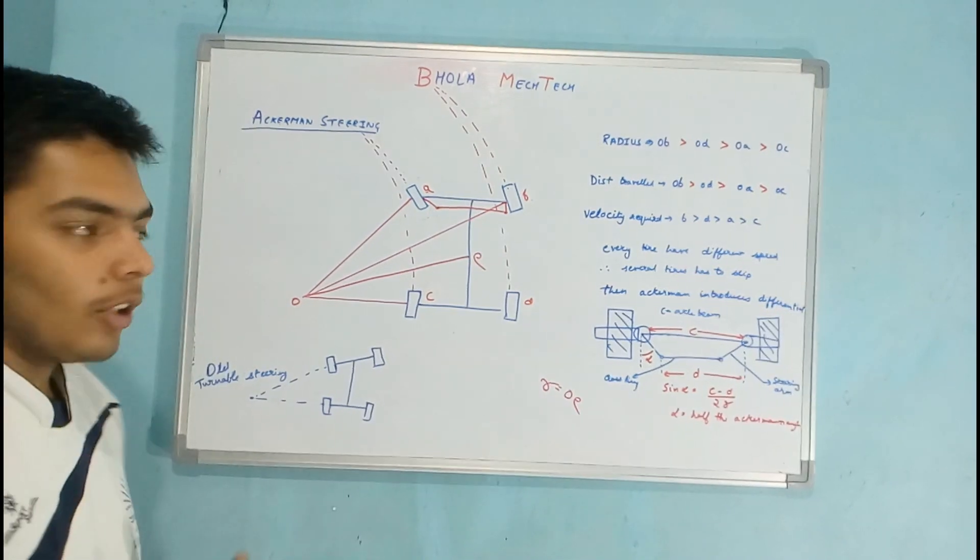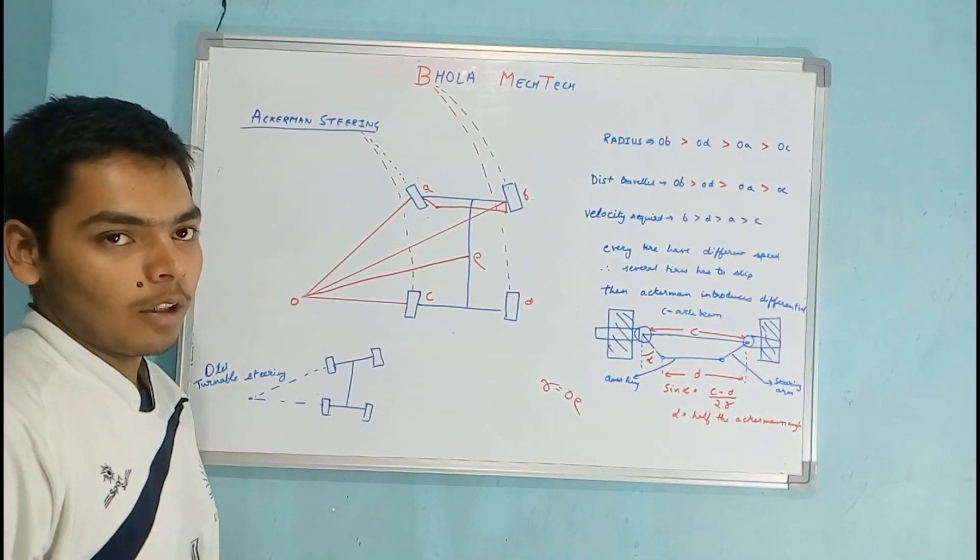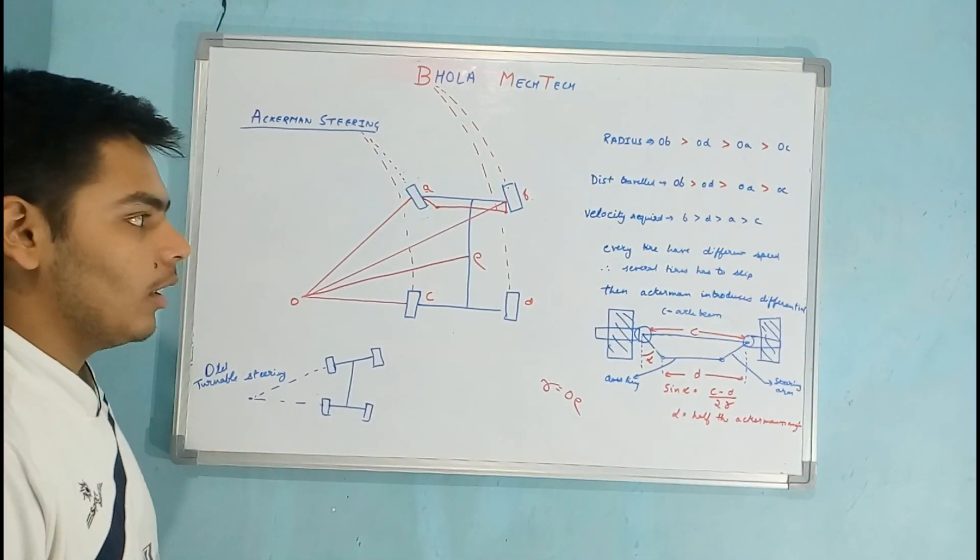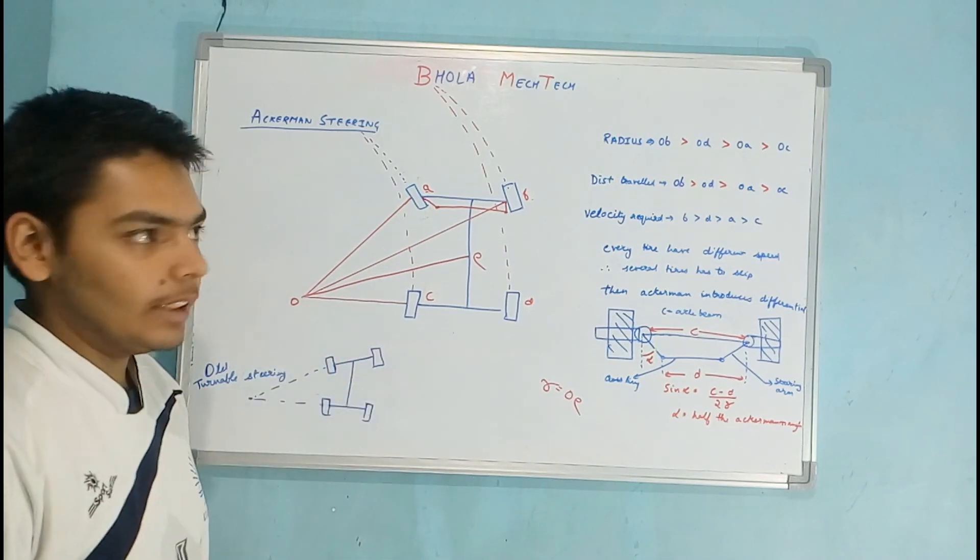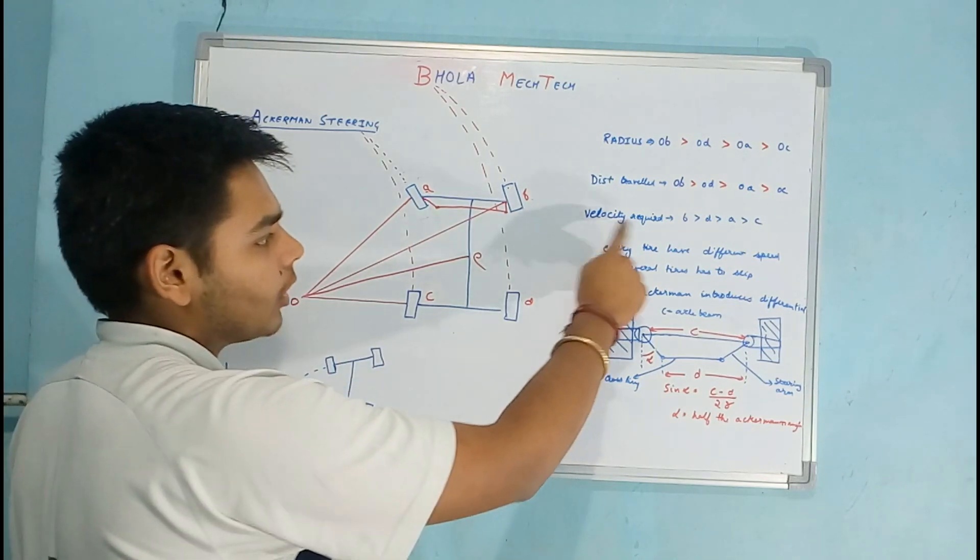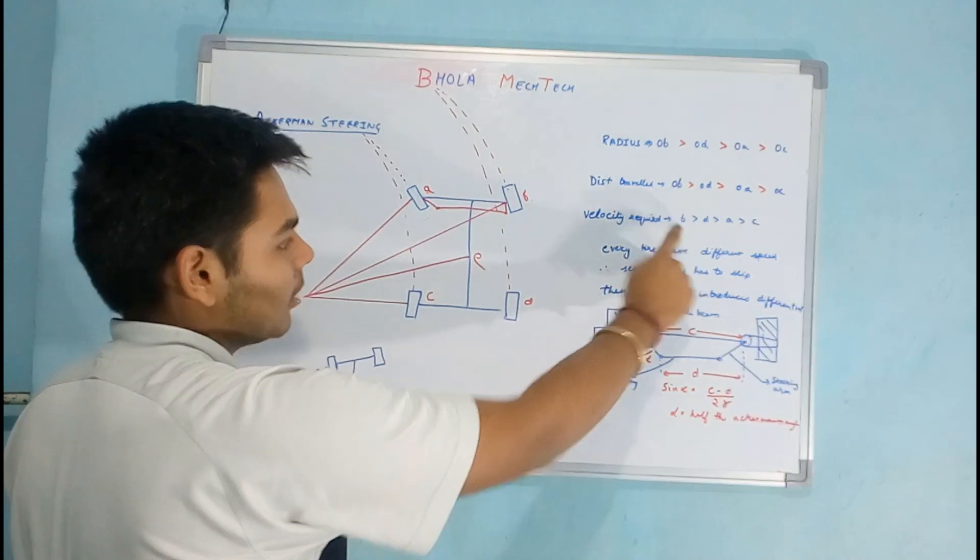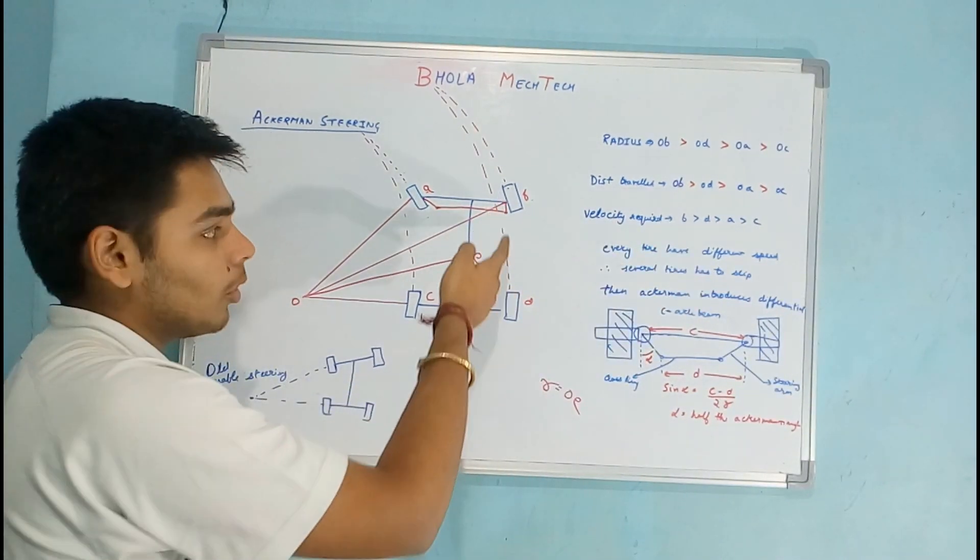Therefore to maintain the velocity of the vehicle constant, the velocity of the tire must be changing. Since velocity is required, the velocity required by D must be highest because it has to travel longer distance in the same time.